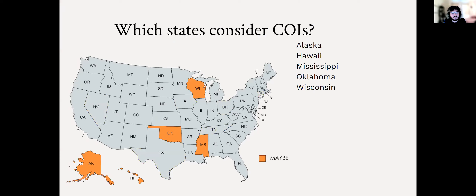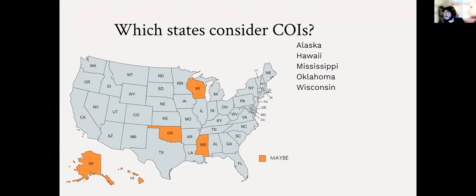Now we're in more of the maybe area. We have Alaska, Hawaii, Mississippi, Oklahoma, and Wisconsin. For example, Alaska states in their constitution that each house district shall be formed of contiguous and compact territory containing as nearly as practicable a relatively integrated socioeconomic area. Highlighting that socioeconomic area language can relate to communities of interest, but it's not explicitly stated as in Michigan and Arizona.